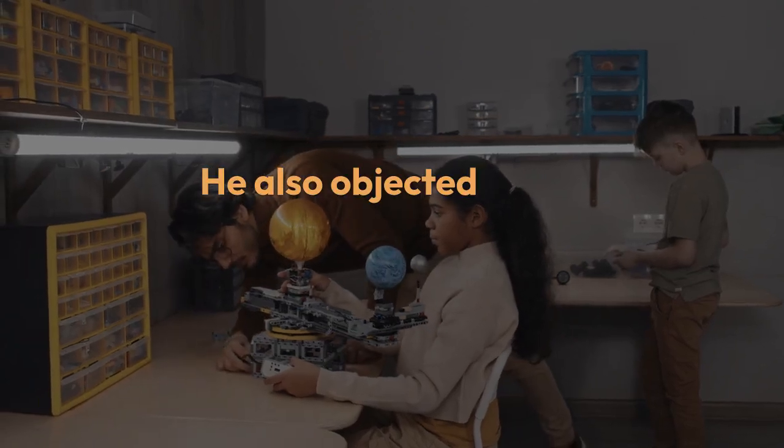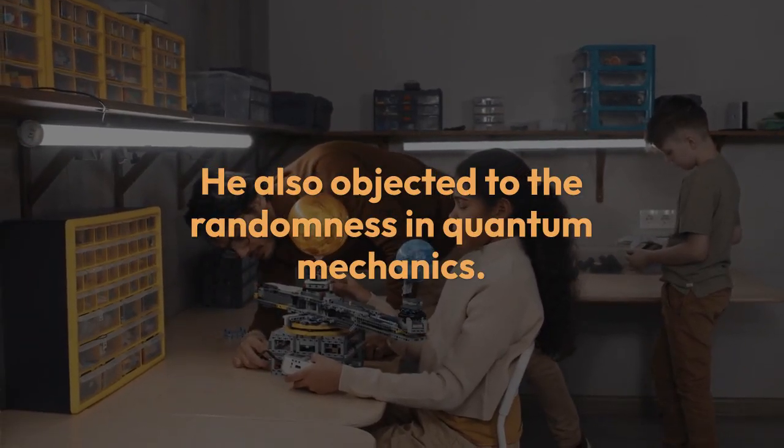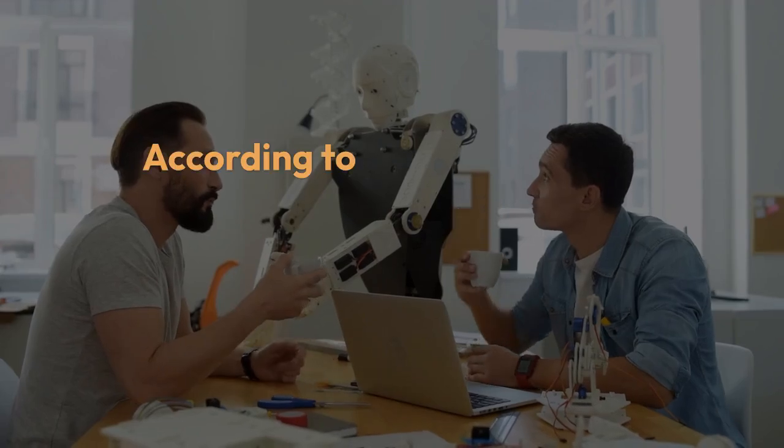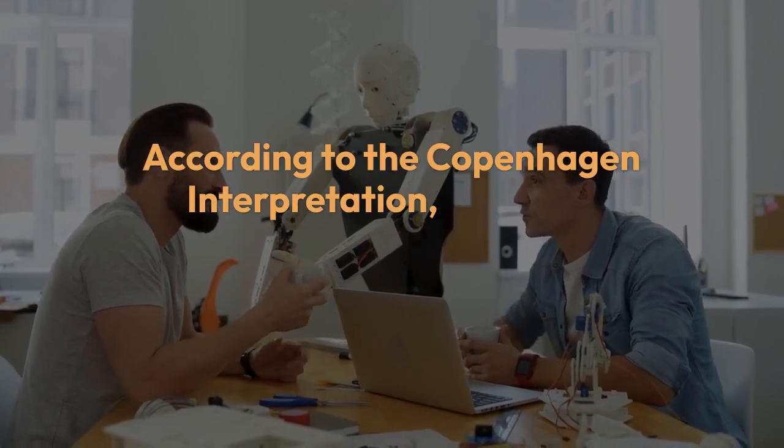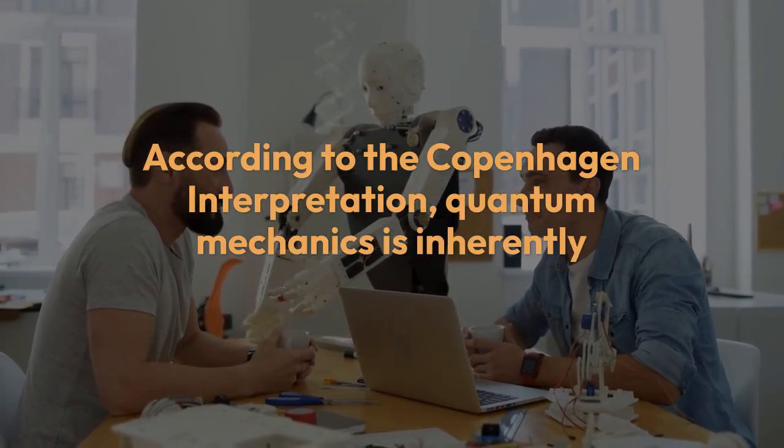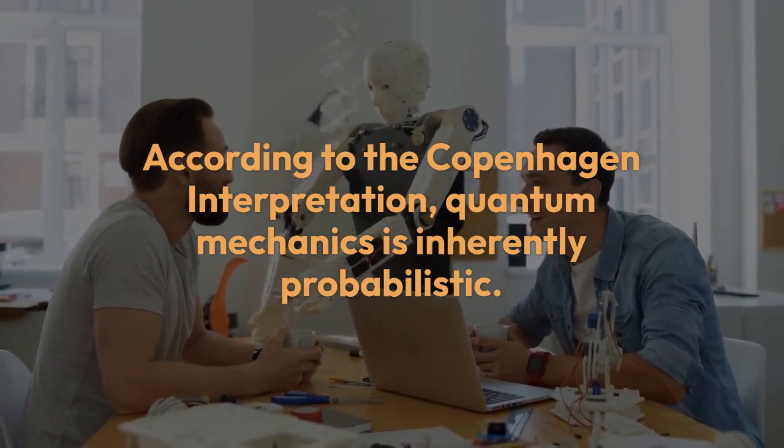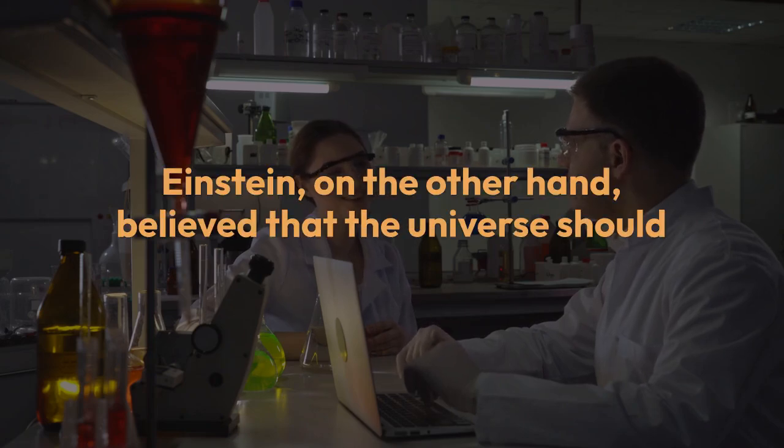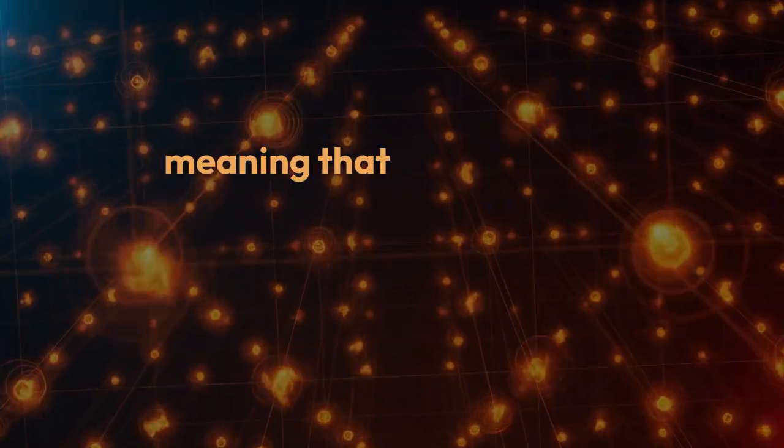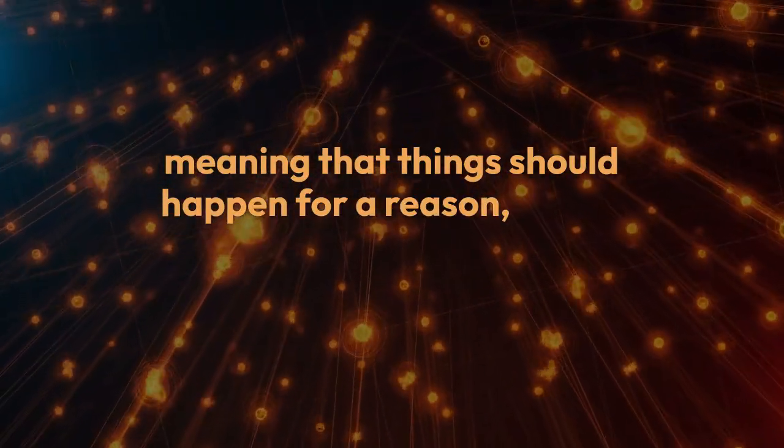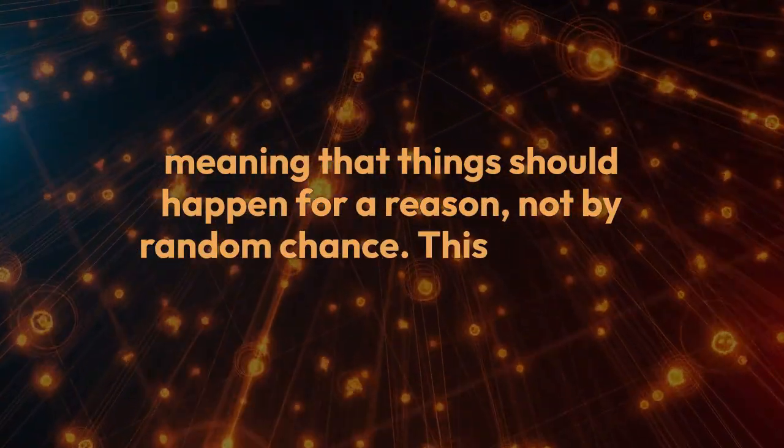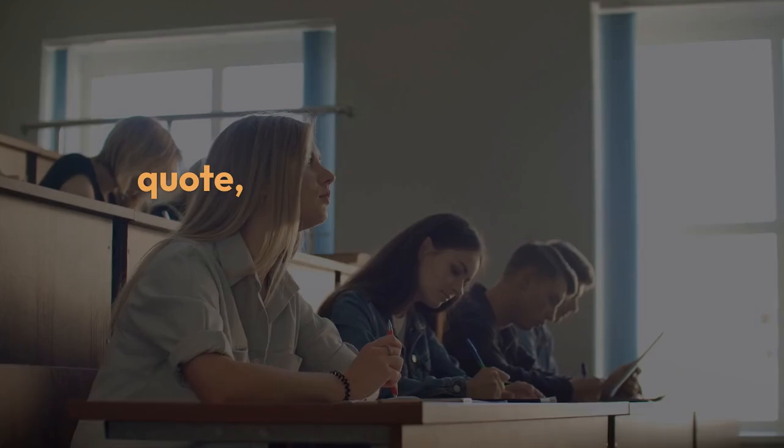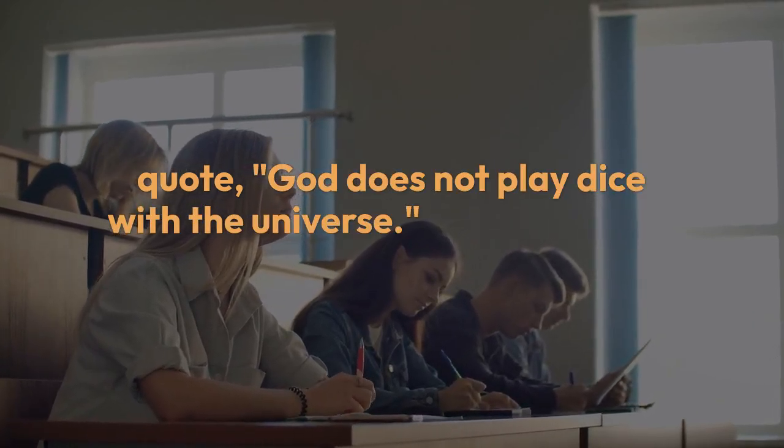He also objected to the randomness in quantum mechanics. According to the Copenhagen interpretation, quantum mechanics is inherently probabilistic. Einstein, on the other hand, believed that the universe should be deterministic, meaning that things should happen for a reason, not by random chance. This led to his famous quote, 'God does not play dice with the universe.'